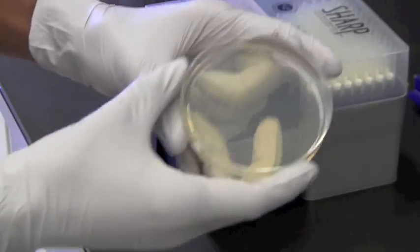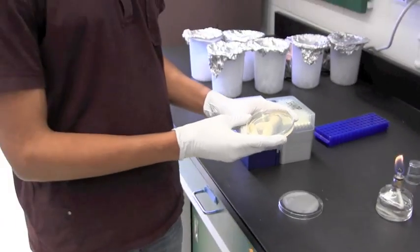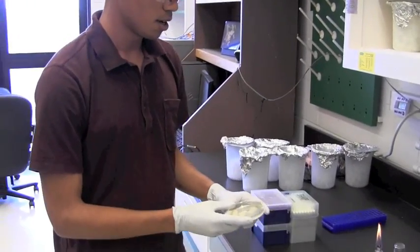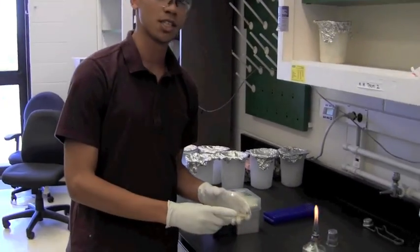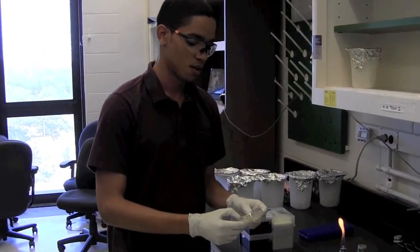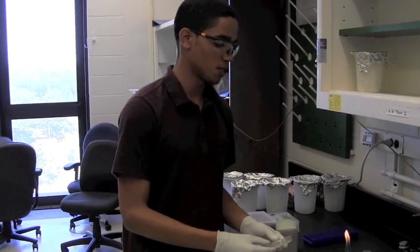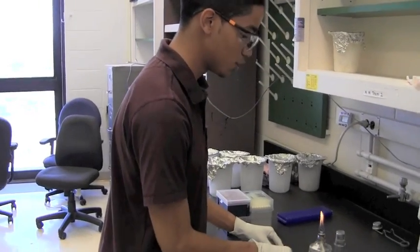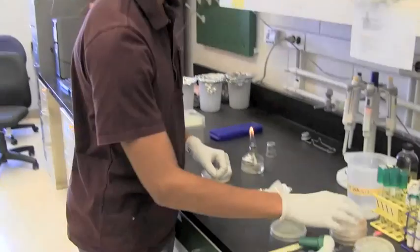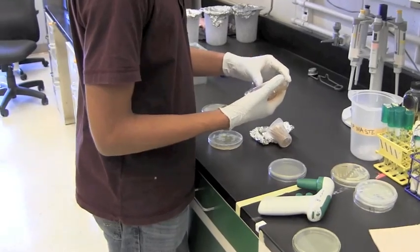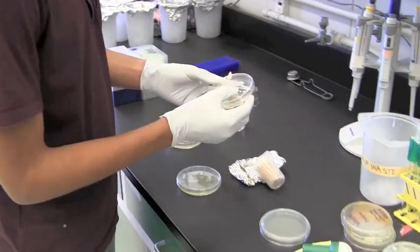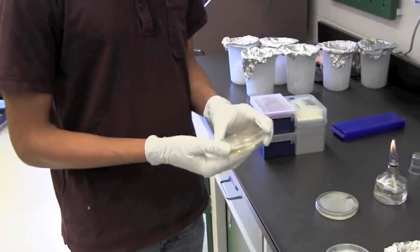So this is how you do a streak out plate and by tomorrow or a few days we should have single colonies that can be picked for your experiments of interest. Just to demonstrate what it will look like I have some old streak out plates that will show you what to expect.